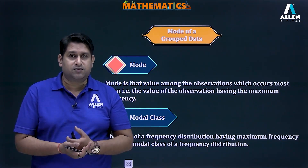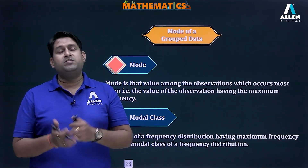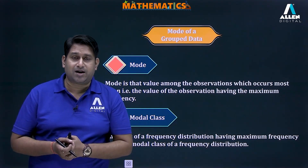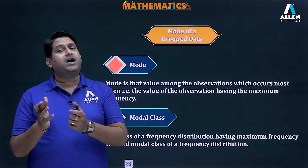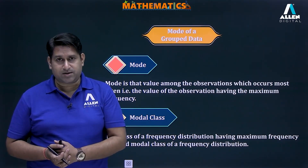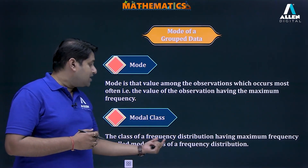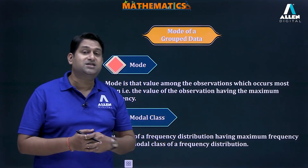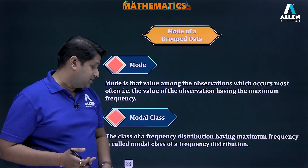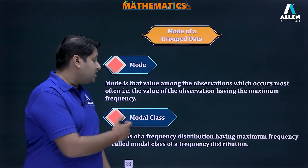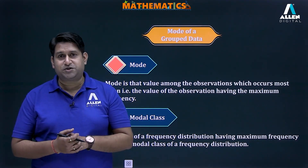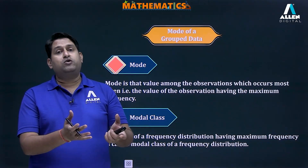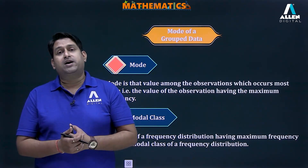Since our data has been organized in the form of class intervals, we will have a modal class. The modal class will be the class which is having the highest frequency. So the class of a frequency distribution having maximum frequency is known as the modal class.